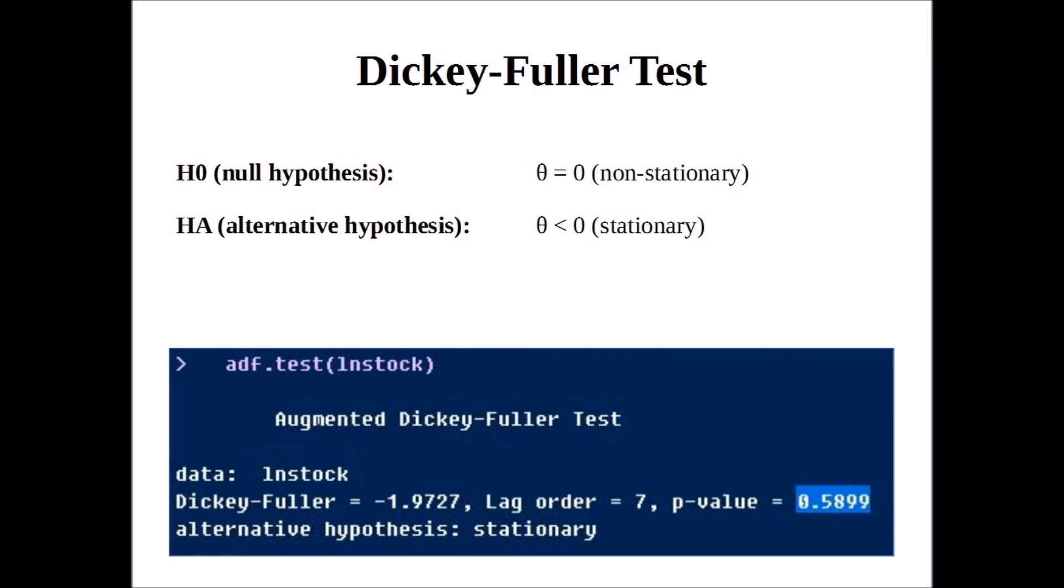However, the only way we're going to know for sure if our model is non-stationary is to conduct a Dickey-Fuller test. In this example we can see that our Dickey-Fuller test is not significant at the 5% level with a p-value of 0.5899. This means that our data is non-stationary and this has important implications when it comes to specifying the ARIMA model.